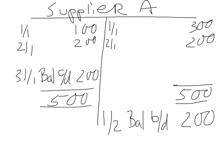So what we essentially have seen here is that the credit side was 200 pounds bigger than the debit side. And as a result we transfer 200 pounds over to the next month. So essentially we have deducted one side from the other, and what we have left we take over to the next month, which is 200 pounds.